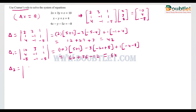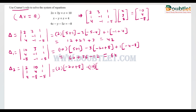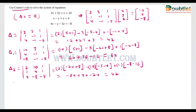Now to find delta 2, we replace the second column with column matrix B [10, 4, -8], keeping [2, 1, 4] and [1, 1, -5]. Expanding by the first row: 2×(−20+8) − 10×(−5−4) + 1×(−8−16) gives −24 + 90 − 24, so delta 2 = 42.